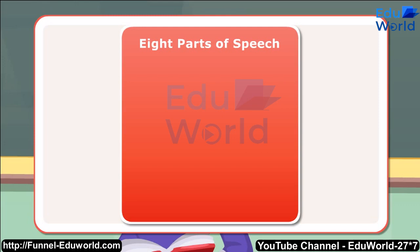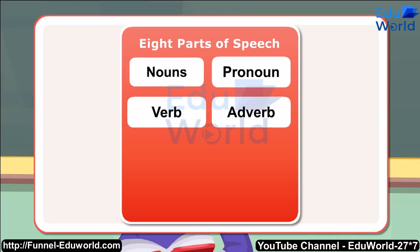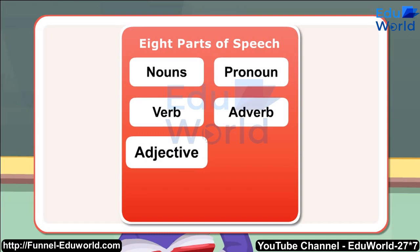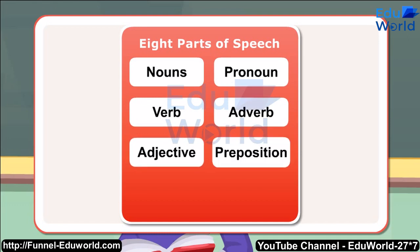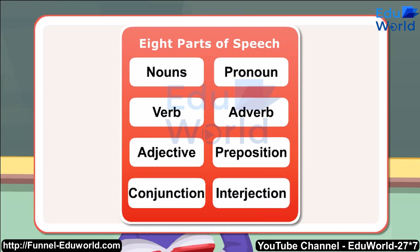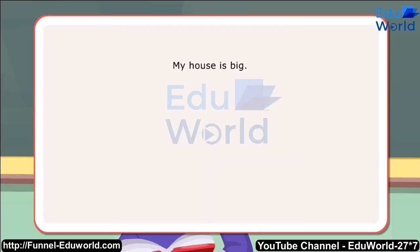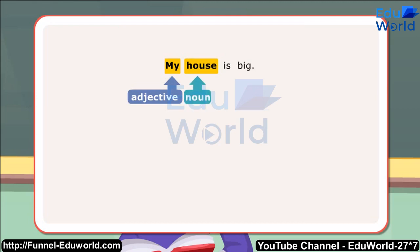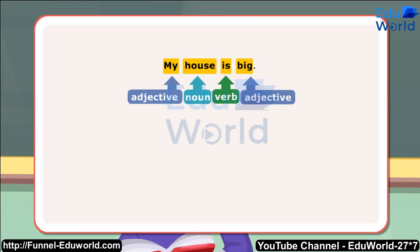These are: nouns, pronoun, verb, adverb, adjective, preposition, conjunction, and interjection. Example: In 'My house is big' — 'My' is an adjective, 'house' is a noun, 'is' is a verb, and 'big' is an adjective. The first letter of each sentence must be capitalized.